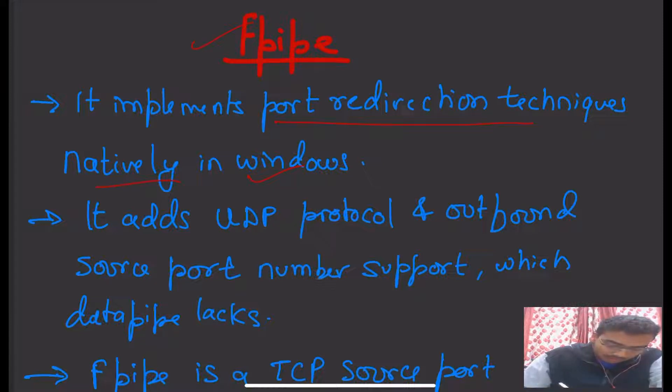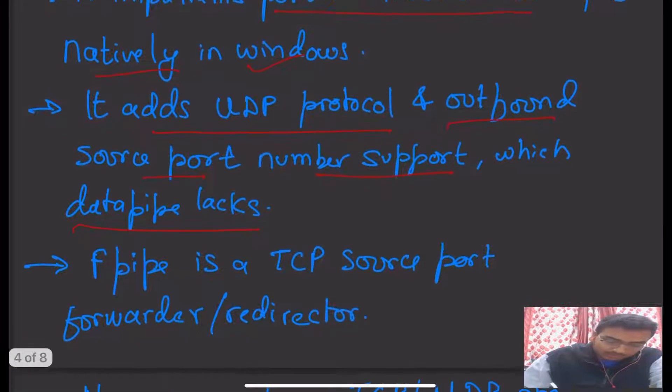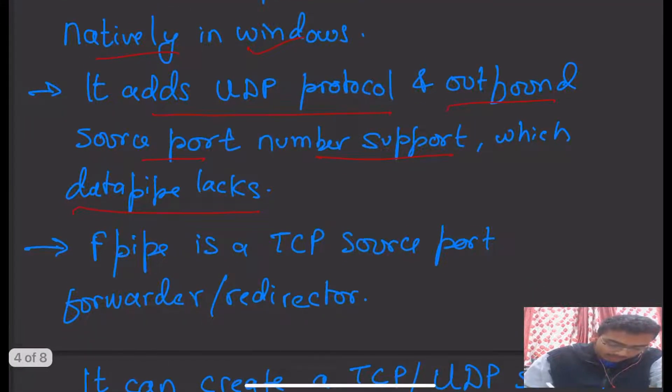The second difference between F-Pipe and Datapipe is that F-Pipe adds UDP protocol and outbound source port number support, which Datapipe lacks. That is our second point of difference.